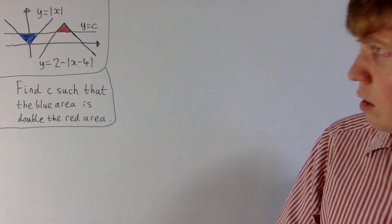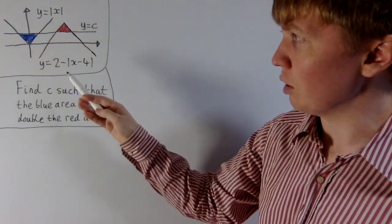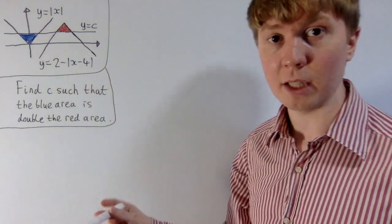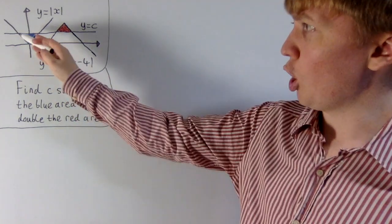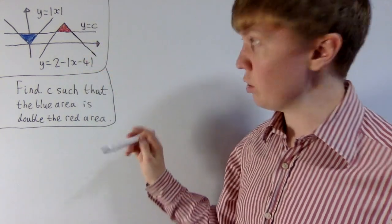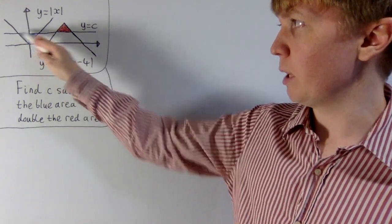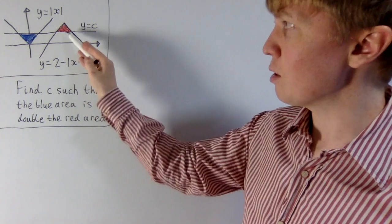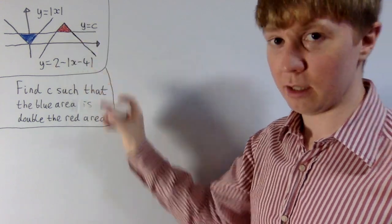So basically our setup is we've got the graph of y as the absolute value of x here on the left. We've also got the graph of y equals 2 minus the absolute value of x minus 4. And finally we've got a horizontal line at height c, the line y equals c, which cuts through both of these in such a way that our blue area, so the area bounded between our line and our first function, this is twice as big as the red area bounded between our line and the second function.